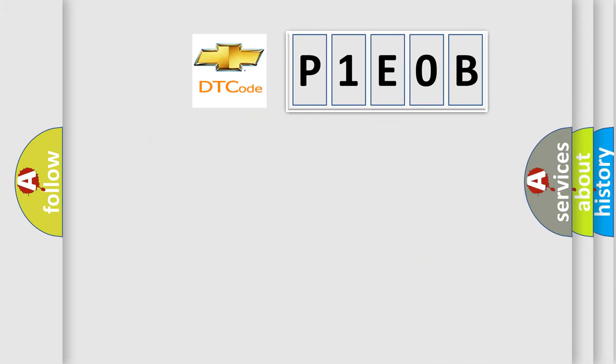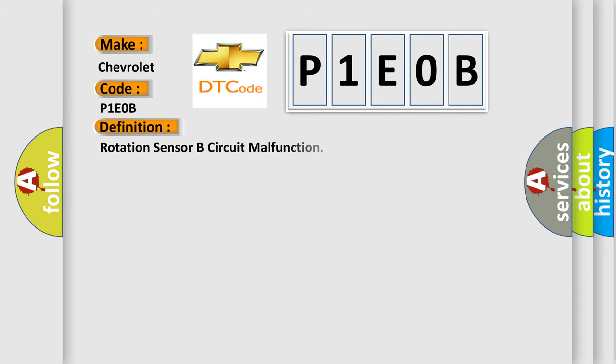So, what does the diagnostic trouble code P1E0B interpret specifically for Chevrolet car manufacturers? The basic definition is Rotation sensor B circuit malfunction.